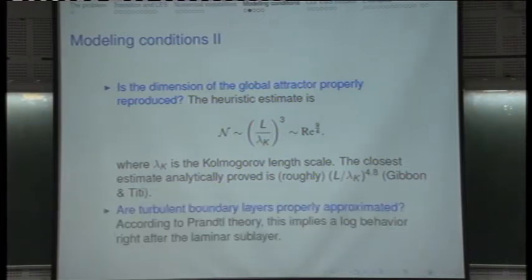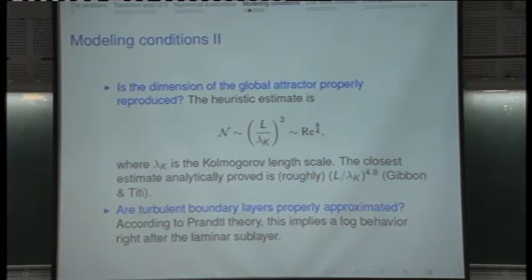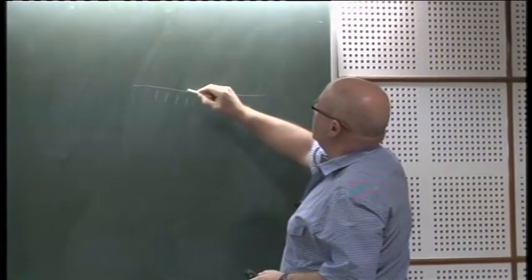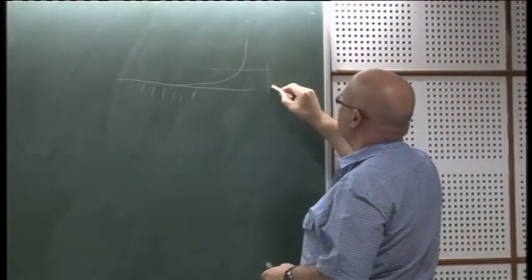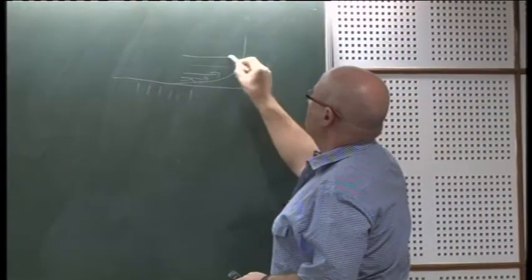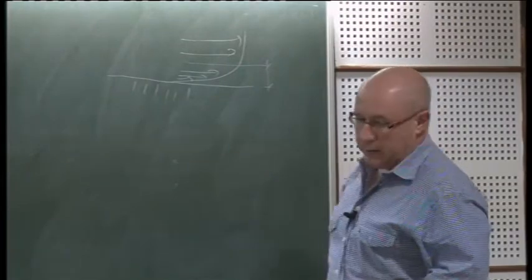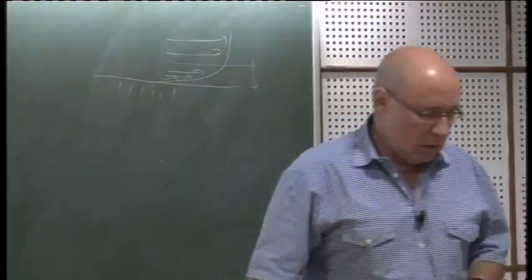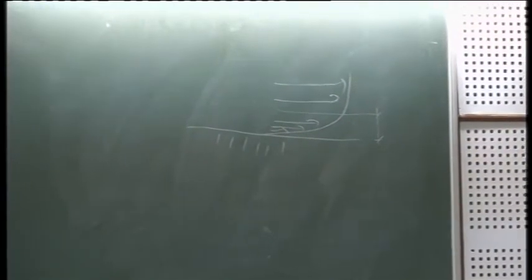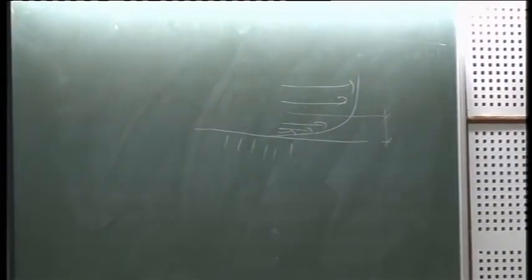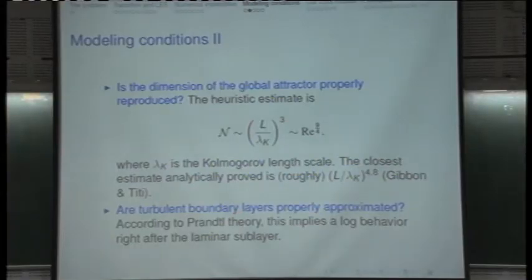Another important property: are turbulent boundary layers properly approximated? Close to boundaries, the flow displays a region where there is a rapid variation of the velocity profile. Those are called boundary layers. For fully developed flow, the profile is well known — in particular, it has a logarithmic profile close to the boundary. So that has to be appropriately reproduced. This is another modeling condition.